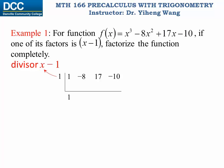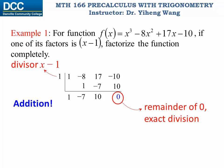We write down the first coefficient and multiply it by the zero, which is one. One multiplied by one equals one — we put it here. For synthetic division we do addition, not subtraction as in long division. Negative eight plus one equals negative seven. Multiplied by the zero, which is one again: negative seven multiplied by one is negative seven. Addition again: seventeen plus negative seven is positive ten. Multiplied by one again, that is ten. Negative ten plus ten is zero — that is the remainder. A remainder of zero indicates exact division.